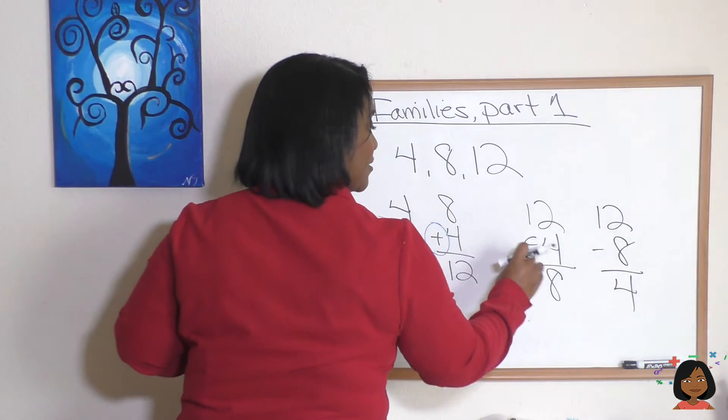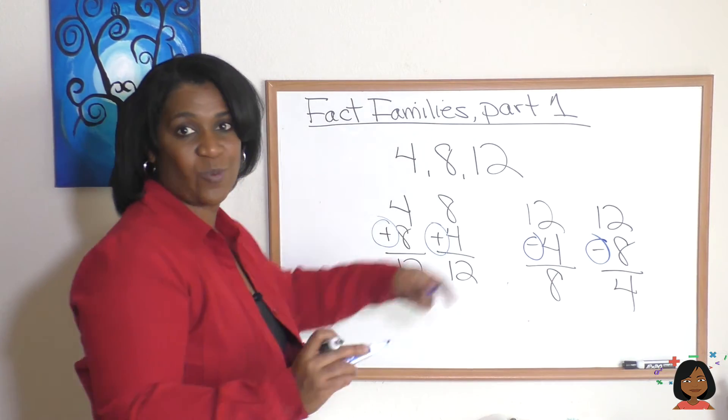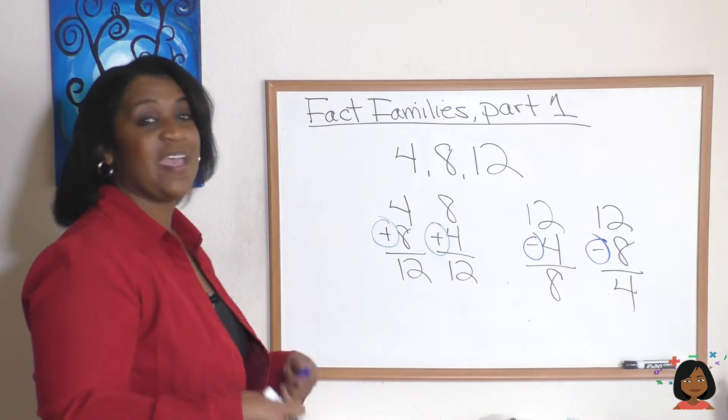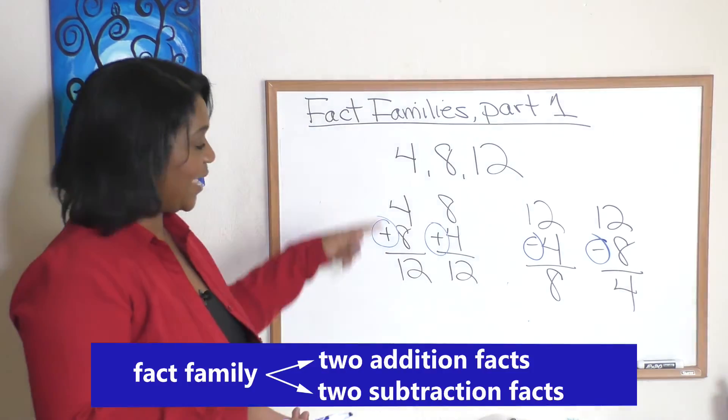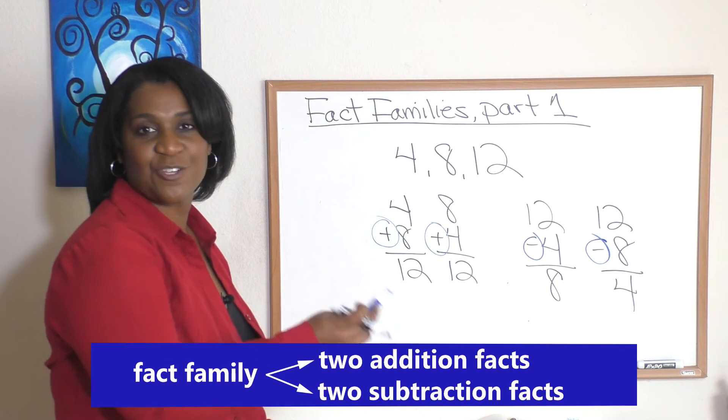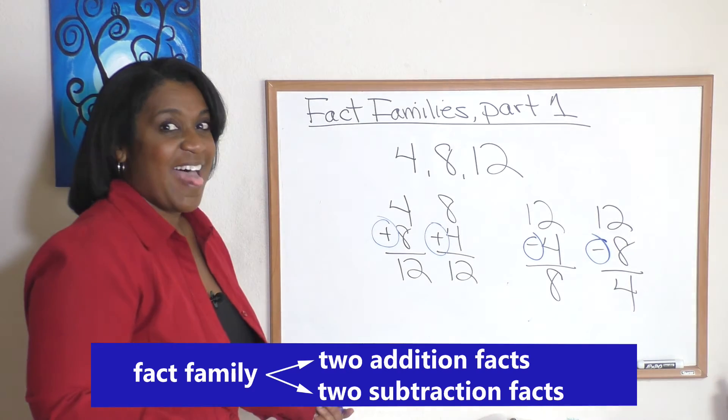And notice each time we use the 4, the 8 and the 12 in a different way to form a fact family. So remember this kind of fact family has two addition facts and two subtraction facts and that's it, part one.